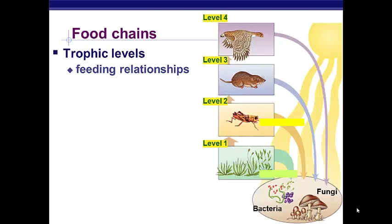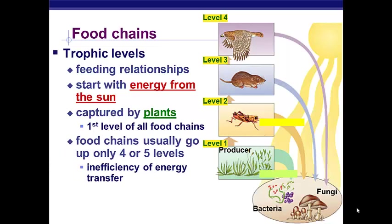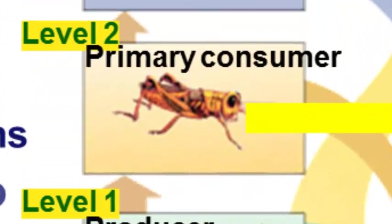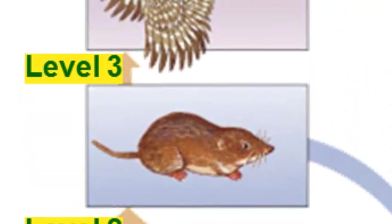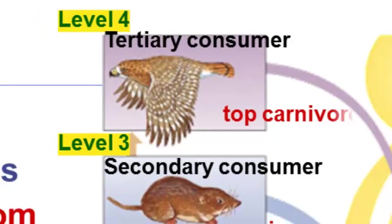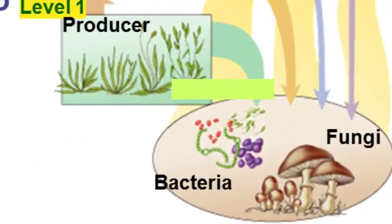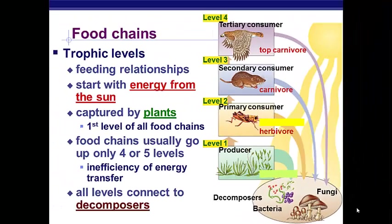Food chains are made up of multiple different trophic levels, or feeding levels. It starts with energy from the sun, which is then captured by the plants — producers are usually the first level of all food chains. The food chain can only go up four or five levels because of inefficient energy transfer. It goes from producers to primary consumers like herbivores, to secondary consumers or carnivores, and sometimes up to tertiary consumers, which are top carnivores. The chain is limited because it runs out of energy eventually. All of these things recycle down through decomposers — fungi and bacteria that break down organisms after they die and recycle those nutrients back into the system.